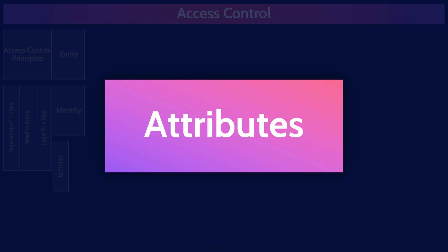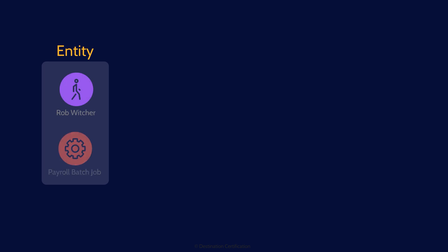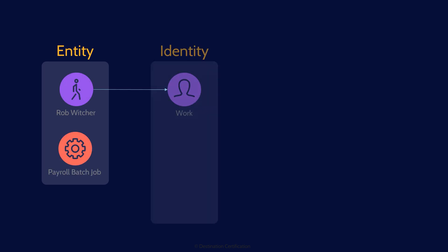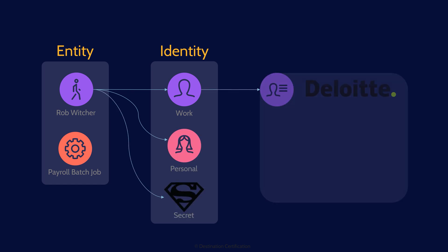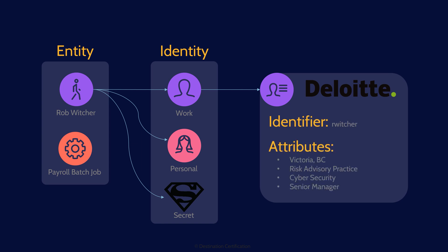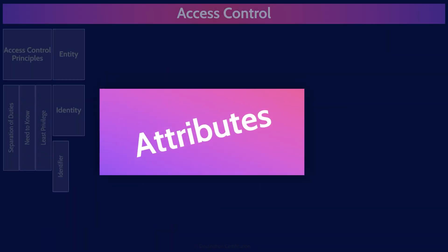Attributes are information associated with an identity, such as a name, address, role, phone number, etc. Here's a diagram to help visualize the relationship between all of these: an entity is a person or a process, an entity can have multiple identities, and each identity should have a unique identifier like a username, plus some attributes like job, role, title, phone number, email address, etc.